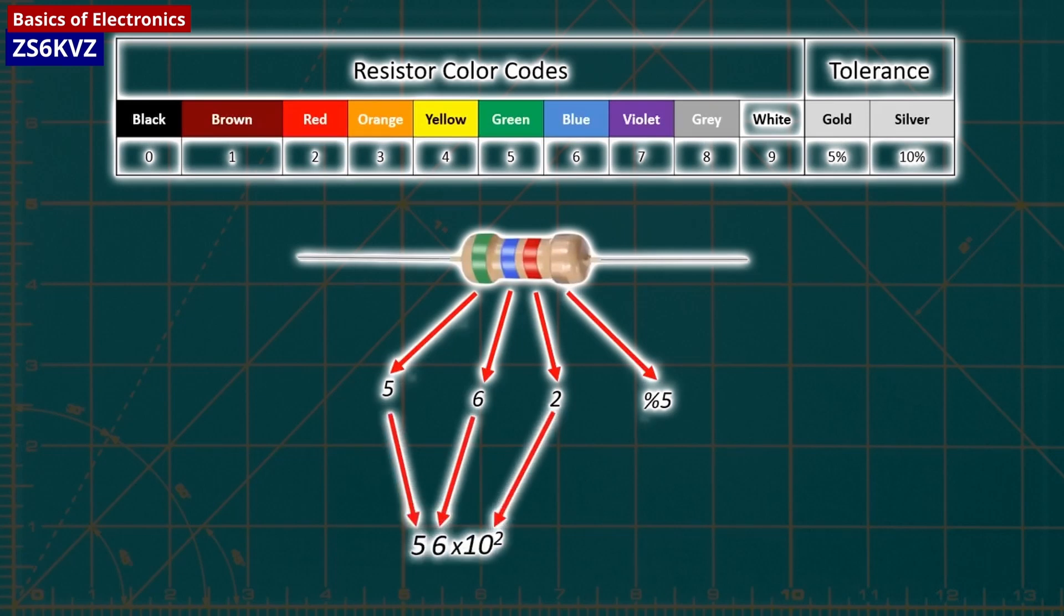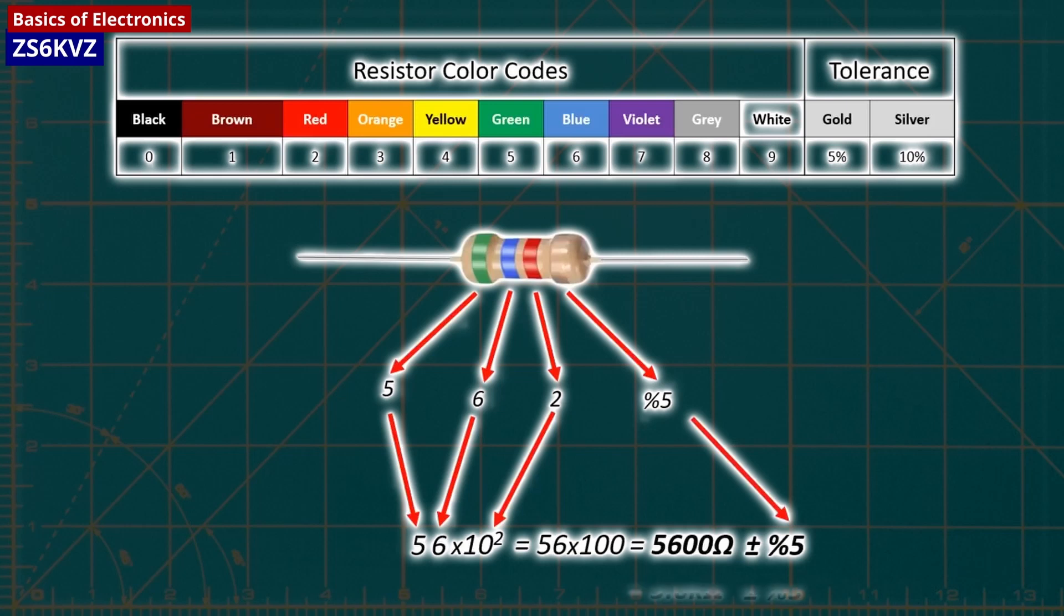Values of ohms over a million are represented using the letter M. For instance, 1,000,000 ohms would become 1M ohms. Any resistor of over 1,000 ohms is typically shortened using the letter K. For instance, 1,000 would be 1K ohms, 3,900 ohms would translate to 3.9K ohms, and 470,000 ohms would become 470K ohms.